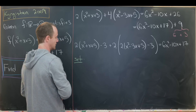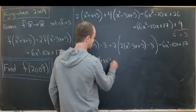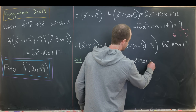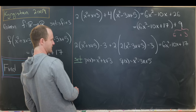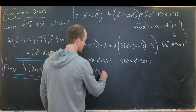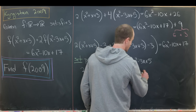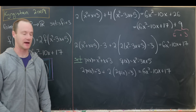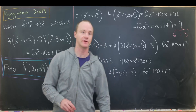Now let's give names to these polynomials. I'll set p(x) = x² + x + 3, and q(x) = x² - 3x + 5. Then our equation up here is of the form: two times (p(x) - 3) plus two times two times (q(x) - 3) equals 6x² - 10x + 17. This gives us a motivated way to rewrite the functional equation so it looks a little simpler.